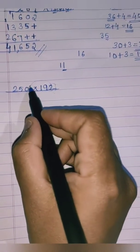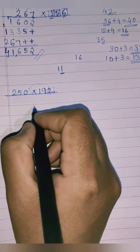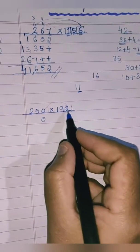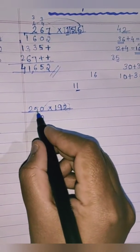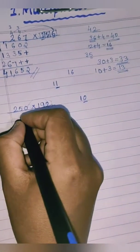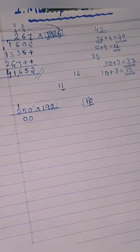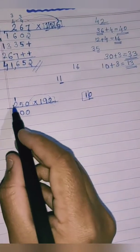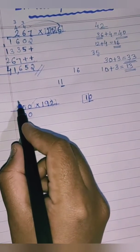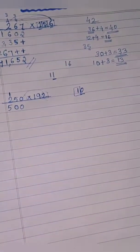First: 2 into 0 is 0 — this is one of the properties of multiplication. Then 2 into 5: two fives are 10, so write 0 here and carry 1 to the next place. Next: 2 into 4 plus carry 1 equals 5. So we get 500.